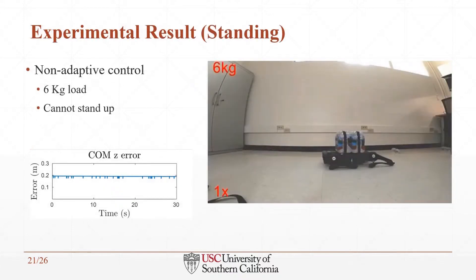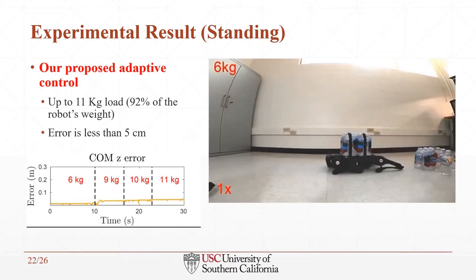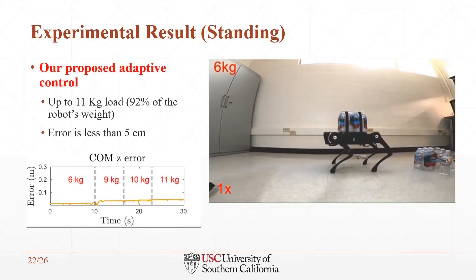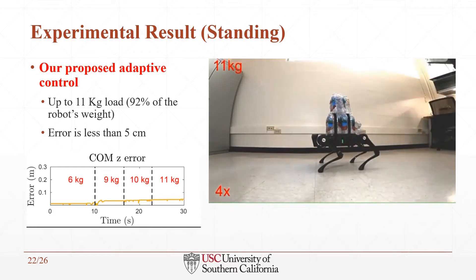For the experiment, we tested the robot during standing and walking. As you can see in the video, the robot can stand on its feet with a 6 kg load using the non-adaptive controller. On the other hand, by employing adaptive control, the robot can stand up with a load up to 11 kg, which is 92% of its weight. It's less than 5 cm error.